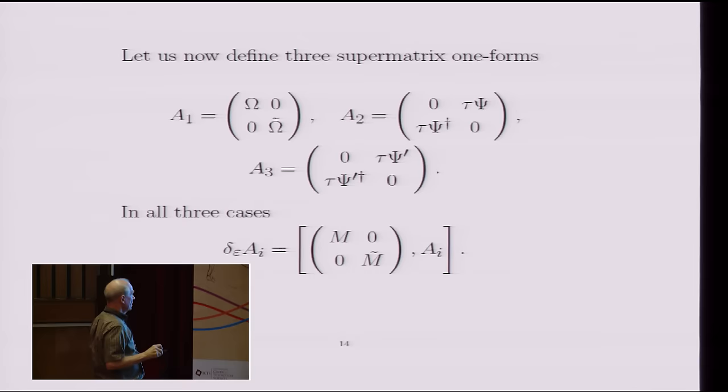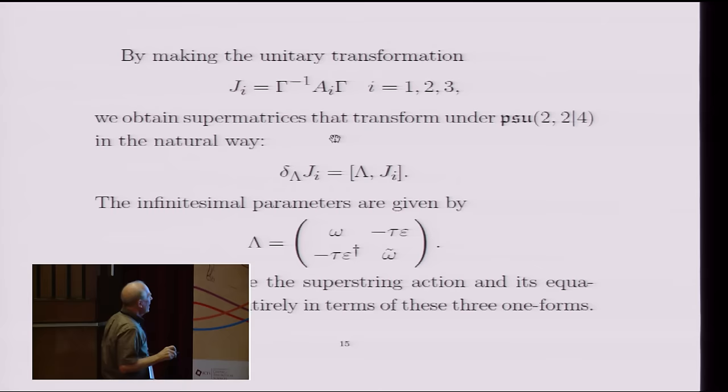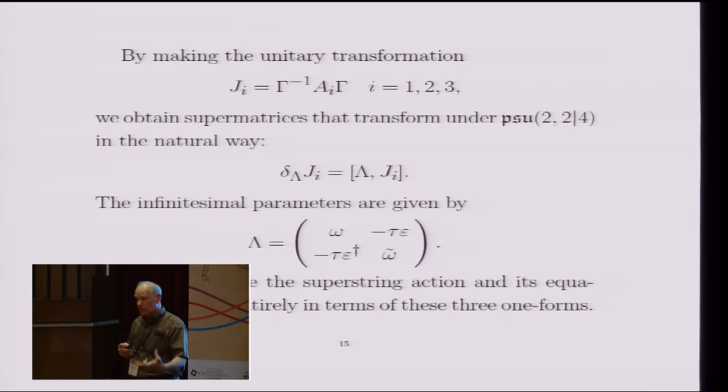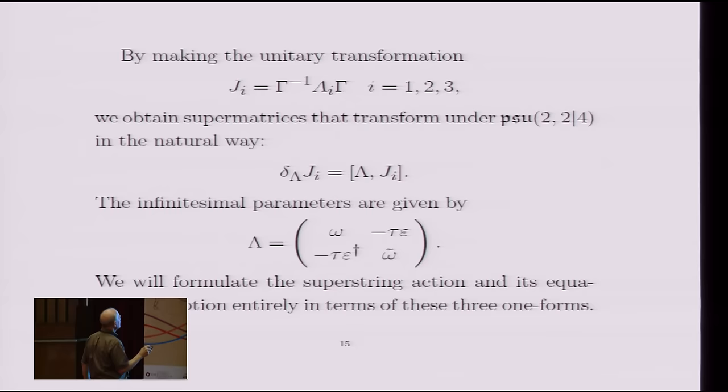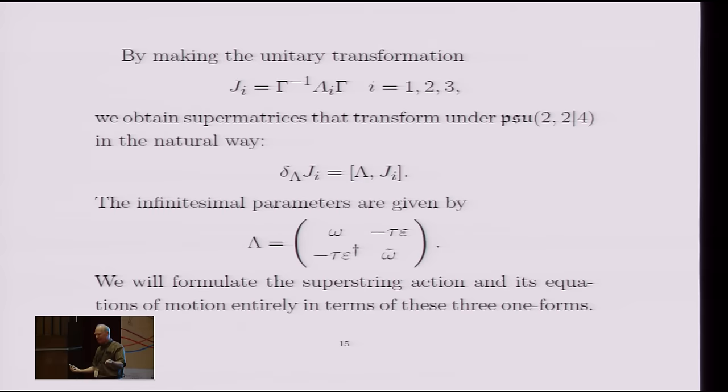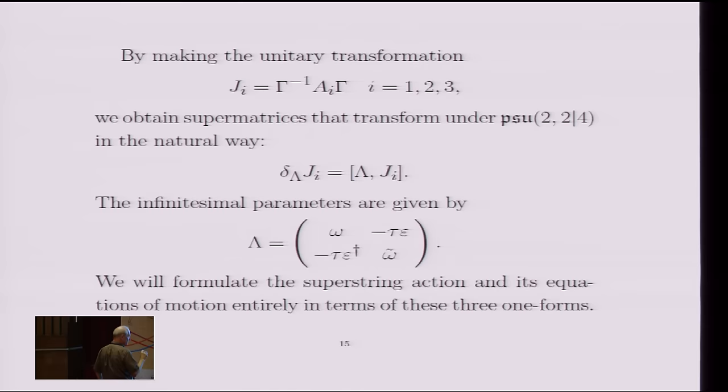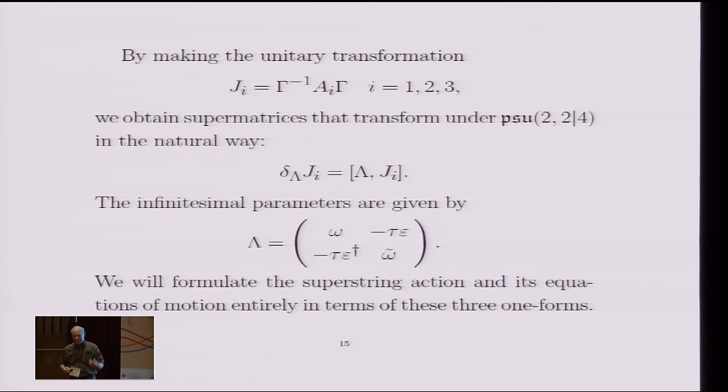So they're the natural things to consider. But I don't really want what I want more are things that transform linearly under this entire super algebra. And for that, we use these matrices gamma, which allow you to convert from one kind of index to the other. So I define three other currents, which are just these unitary transformations of these three A's I just defined. And these matrices would just transform in this way, where lambda is this supermatrix. So these three currents are transformed linearly into the super algebra in the obvious natural way. And so one expects the superstring should be formulated in terms of these three currents, these three one-forms. And that's indeed the case.